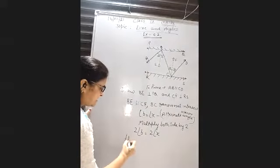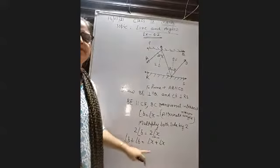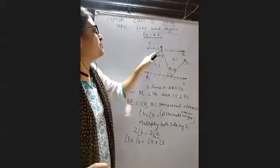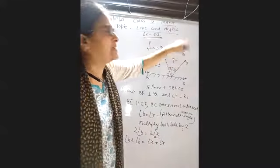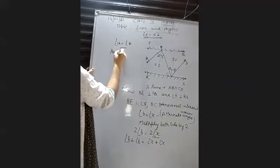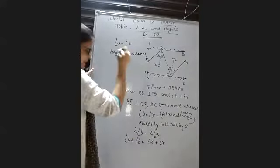Double angle B can be written as angle B plus angle B, and double angle X as angle X plus angle X. Now, by the law of reflection from physics, angle of incidence equals angle of reflection. So angle B equals angle A. Similarly, angle X equals angle Y.